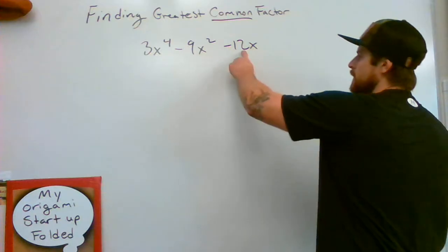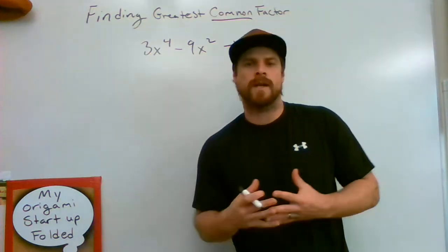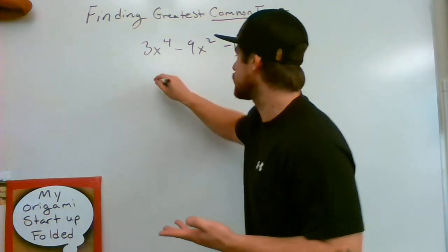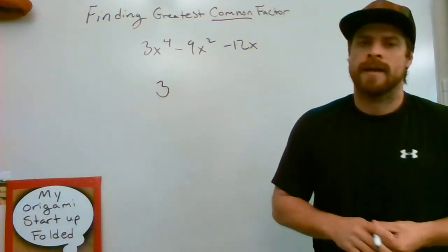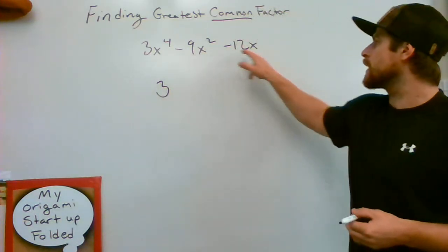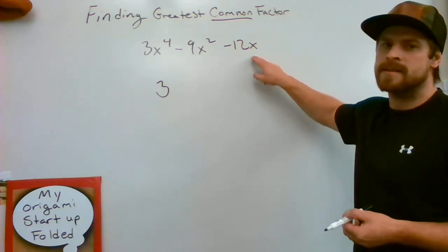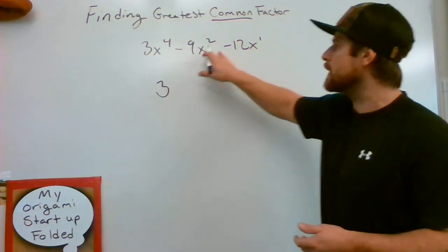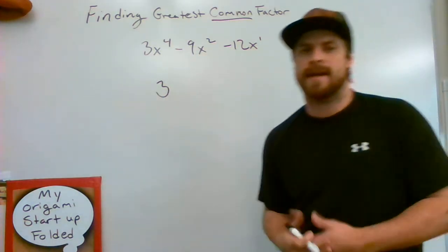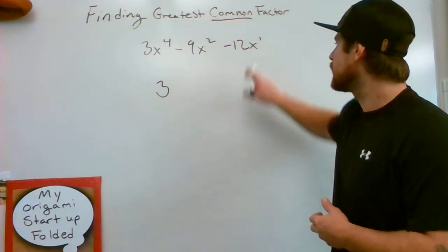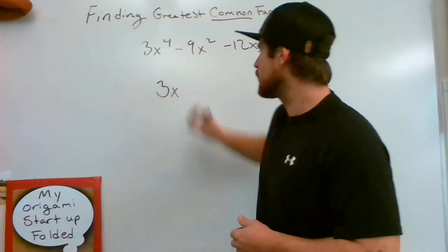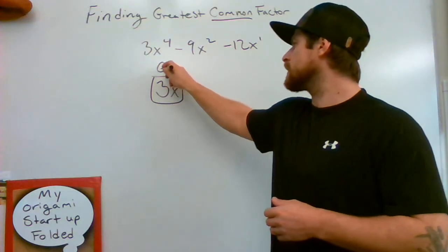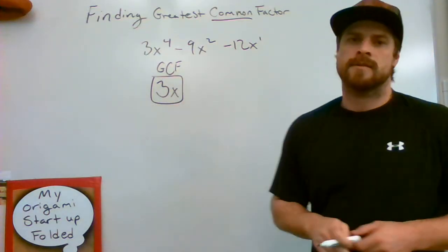First thing I'm going to look at is my coefficients, 3, 9, and 12. What is the common factor between those three? And it would be, you guessed it, a 3. Again, I have x to the 4th, x squared, and x. The lowest exponent is a singular exponent of 1. So that is going to be common in all three of these. They all have an x with them, this being the lowest of them all. So my greatest common factor here is 3x. You can find it very quickly, just like that.